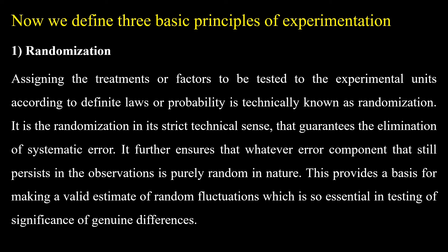Randomization further ensures that whatever error component still persists in the observations is purely random in nature. Whatever errors exist in your experimentation, randomization assures us that those errors are random — not fixed. This provides a basis for making a valid estimate of random fluctuations, which is essential in testing the significance of genuine differences.